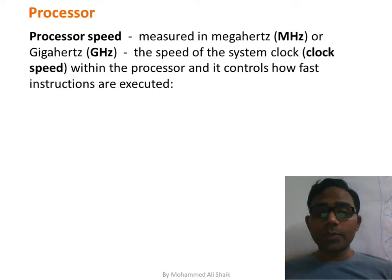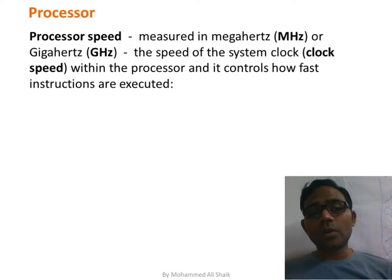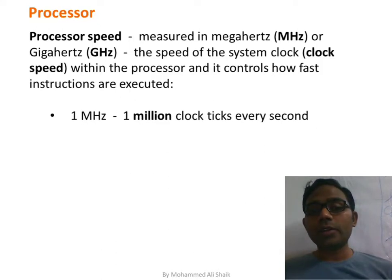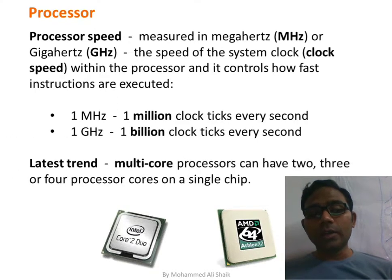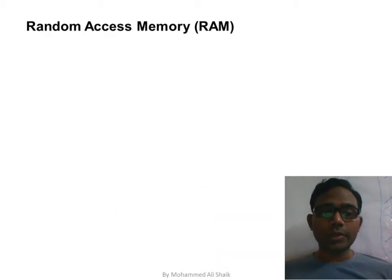Processor speed is measured in megahertz or gigahertz — referred to as clock speed. One megahertz equals one million clock ticks per second; one gigahertz equals one billion clock ticks. The latest trend is multi-core processors, meaning more than one core inside the processor — such as dual-core, triple-core, etc.